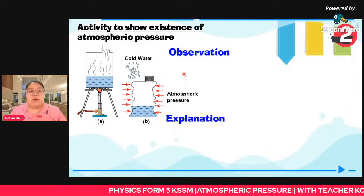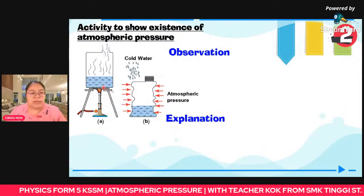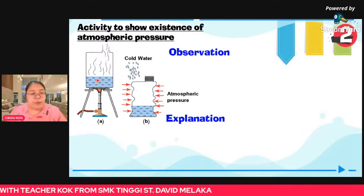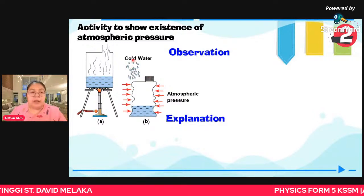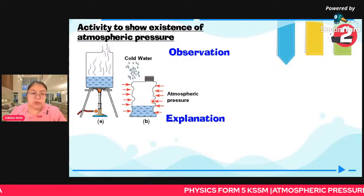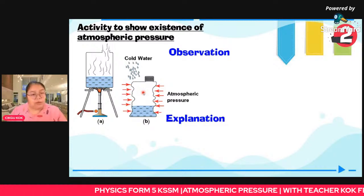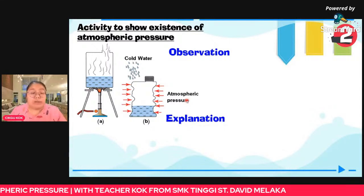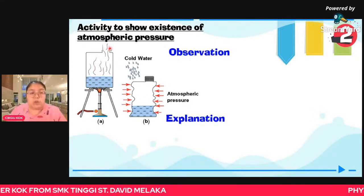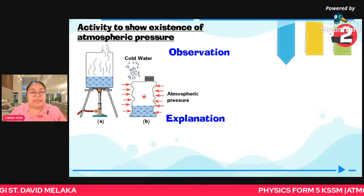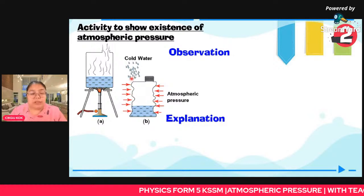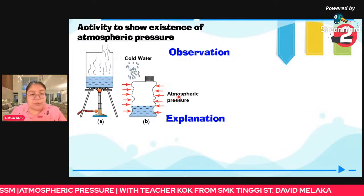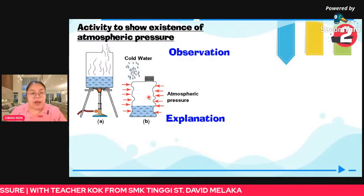Another activity showing atmospheric pressure: take a thin can with water, heat it to a high temperature, then close it. Pour cool water over it. You'll find the shape becomes deformed. Why? Because of atmospheric pressure. When you heat it, you force all the gas out, so inside becomes low pressure. Atmospheric pressure outside is now bigger, so it compresses the can from outside — bigger pressure compresses the lower pressure — and finally the can becomes deformed.